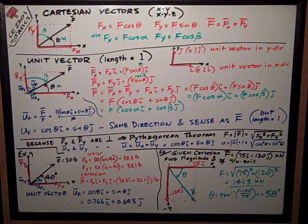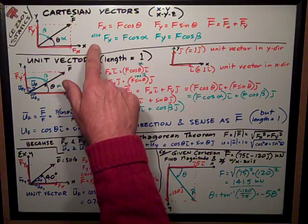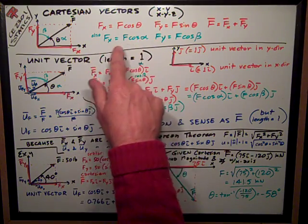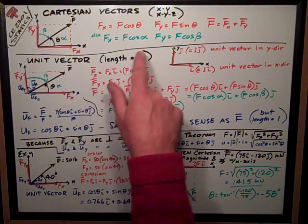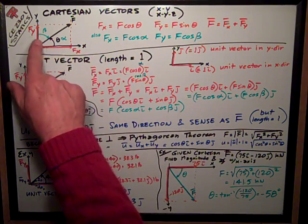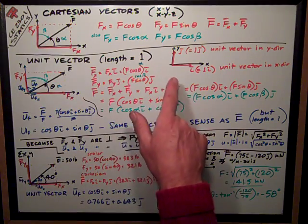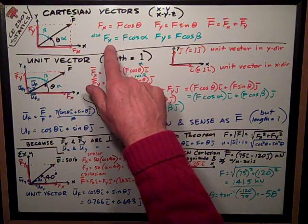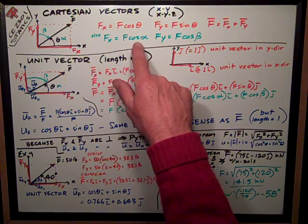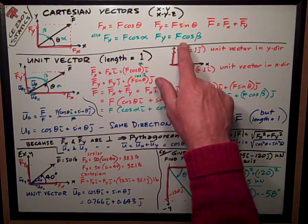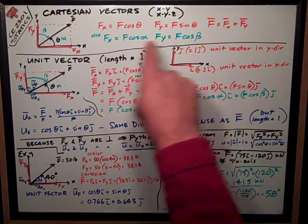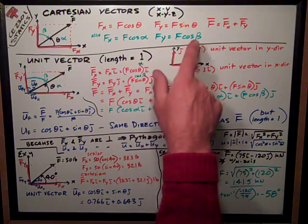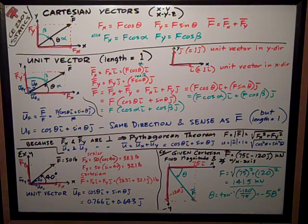As we transition into three-dimensional x, y, z coordinates, I want to also introduce this concept of the angle to the x-axis being alpha, and the angle to the y-axis being beta. We'll talk about this later, but fx is also equal to f times the cosine of alpha, and fy is equal to f times the cosine of beta. These are like direction angles.